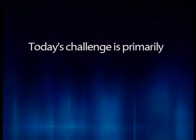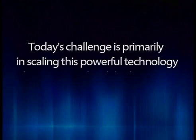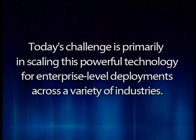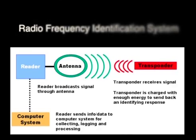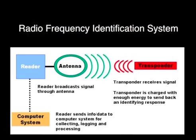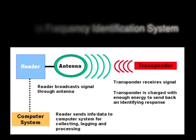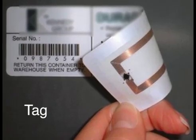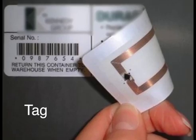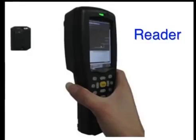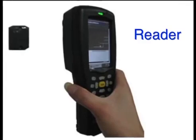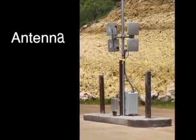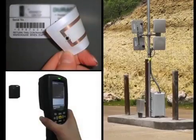Today's challenge is primarily in scaling this powerful technology for enterprise-level deployments across a variety of industries. The radio frequency identification system basically consists of three components: a tag, a reader, and an antenna or coil. Now let us discuss about each component one by one.